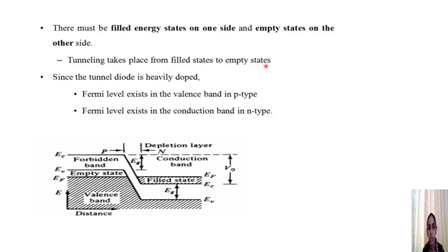For tunneling to occur, the filled states and empty states must be at the same energy level. There should be empty states in the P-type material and filled states in the N-type material aligned at the same level. Since the tunnel diode is heavily doped, the Fermi level exists in the valence band in the P-type and in the conduction band in the N-type.